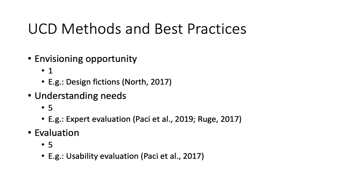In this part, I want to talk about the UCD methods and best practices. As I mentioned, most of the articles use UCD methods in only one or two stages of the design process. These stages are envisioning opportunity, understanding needs, and evaluation. There is only one article undertaking envisioning opportunity. In this article, North used a design fiction method to predict usage interaction scenarios from the perspective of horses, and this is also the best practice for risk mitigation.